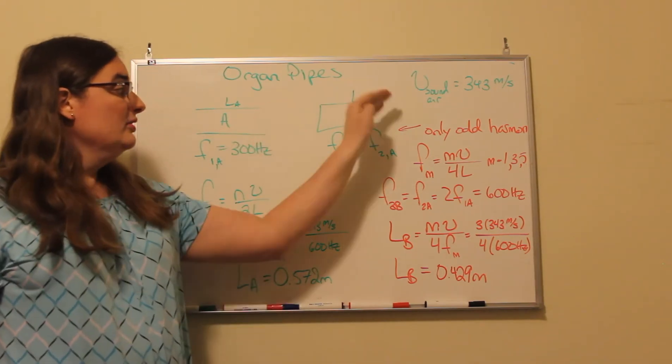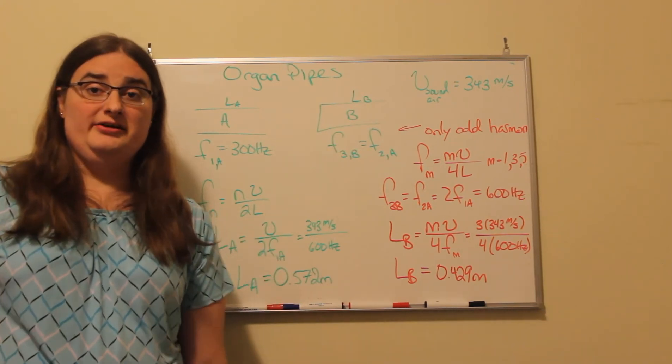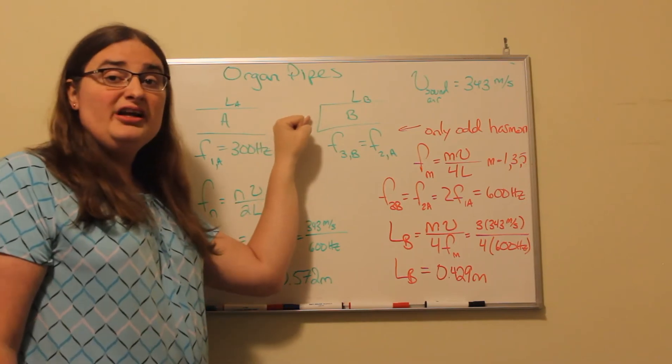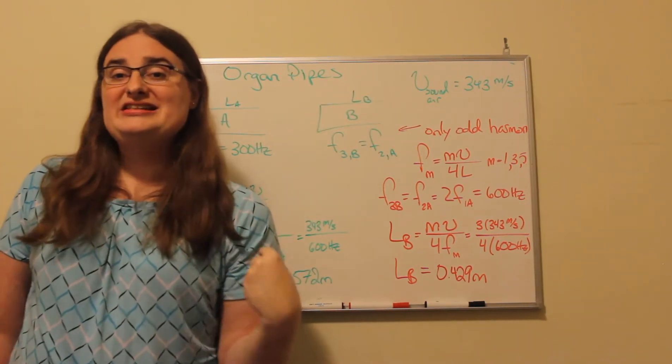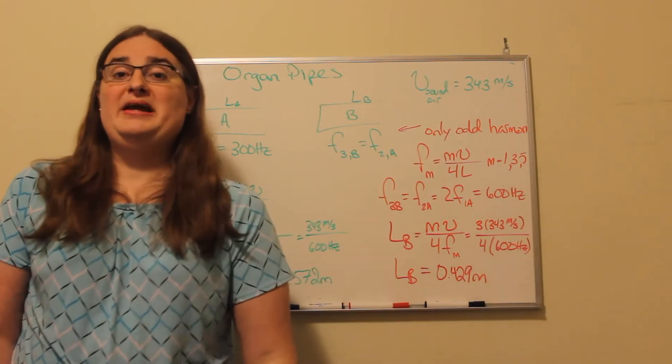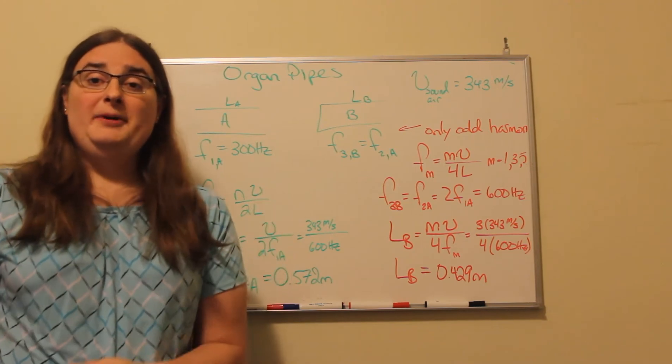Now, an open-closed pipe is what we call a quarter wave resonator, because we end up, for the fundamental frequency, fitting a quarter of a wave inside the pipe itself. Three quarters of the wave would be outside.